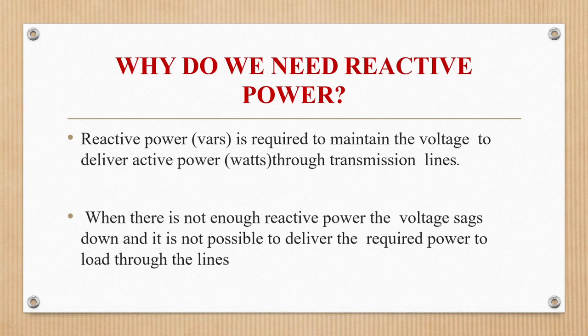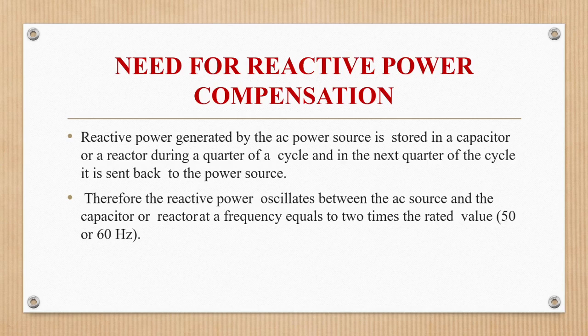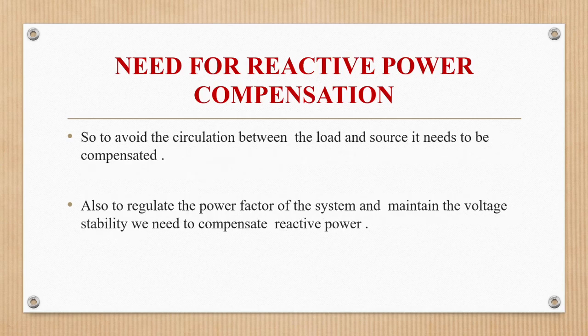Reactive power (volt-ampere reactives) is required to maintain the voltage to deliver active power through transmission lines. When there is not enough reactive power, voltage will sag and it is not possible to deliver the required power to the load. Reactive power generated by the AC power source is stored in a capacitor or reactor during one quarter of a cycle and sent back to the power source in the next quarter cycle. Therefore, reactive power oscillates between the AC source and the capacitor or reactor at a frequency equal to twice the rated frequency (2 × 50 or 60 Hz). To avoid this circulation and to regulate power factor and maintain voltage stability, reactive power needs to be compensated.